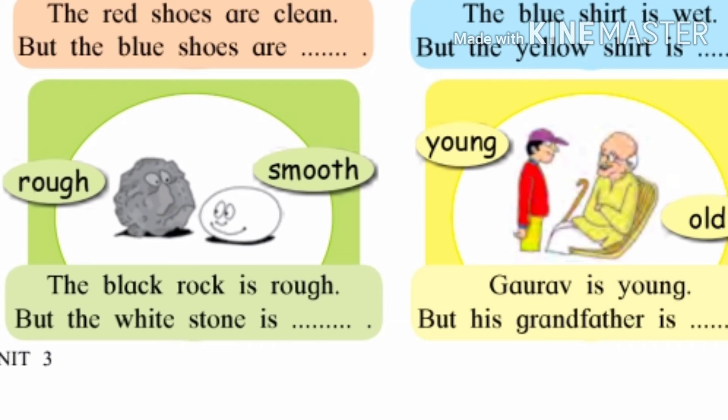Now come to the next picture. One boy and one grandpa are given. Young is the word written near the boy and old is the word written near the grandpa. Young manje tarun, old manje matara. Now complete the sentence: Gaurav is young but grandfather is old. Young and old, these are the opposite words. Tarun ani matara, he viruddharti shabda ahe.